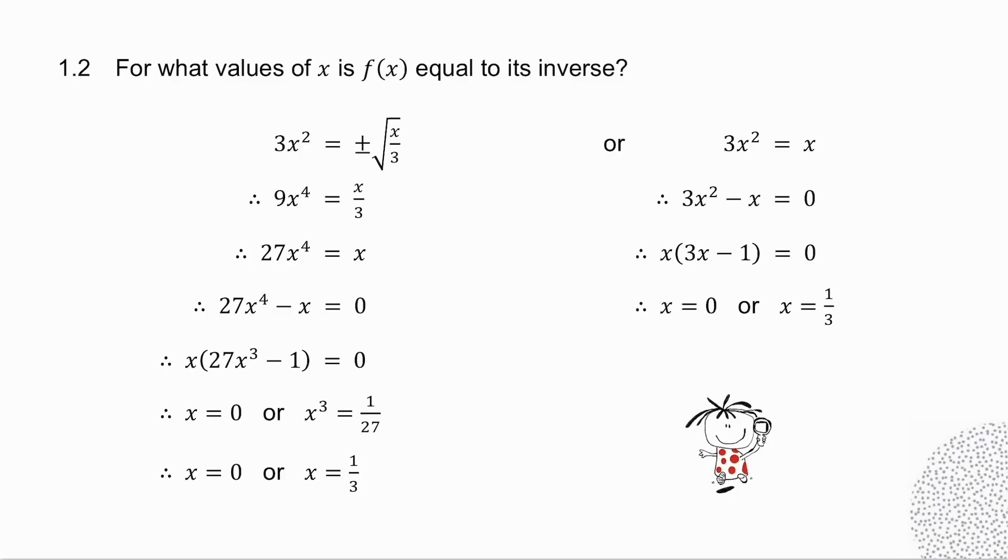For what values of x is f of x equal to its inverse? So if I take the original graph and make it equal to the inverse, there's a fairly lengthy way that I have to do to solve. And I get two answers where x is 0 or x is a third. Instead of doing that, if you remember from the previous video, I said where does a graph and its inverse cut each other? Well, they cut each other on the line y equals x. So instead of taking the graph equal to the inverse, we could take the graph equal to x because it cuts on the line y equals x. And this is a much quicker solution and you get exactly the same answers for it.